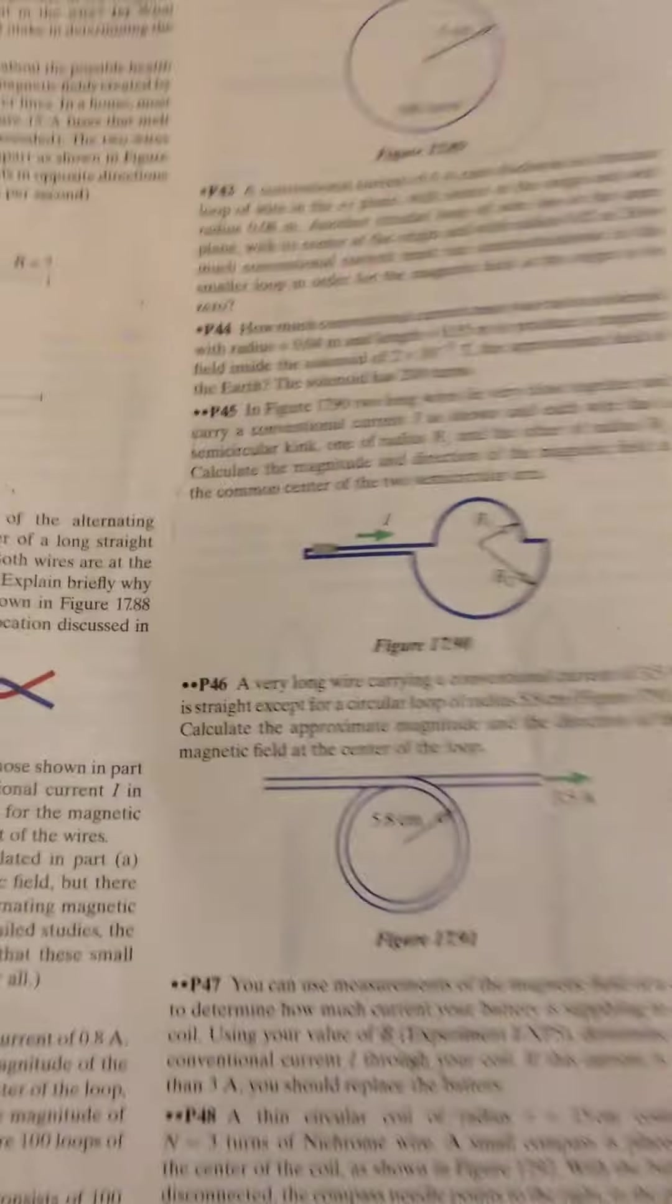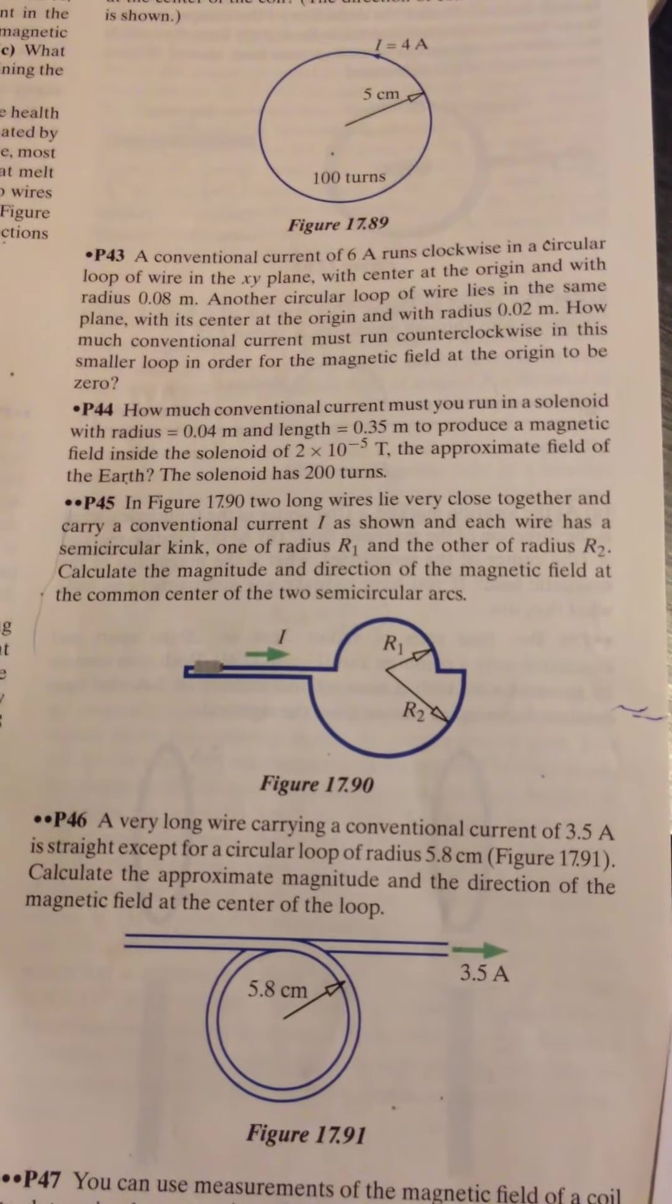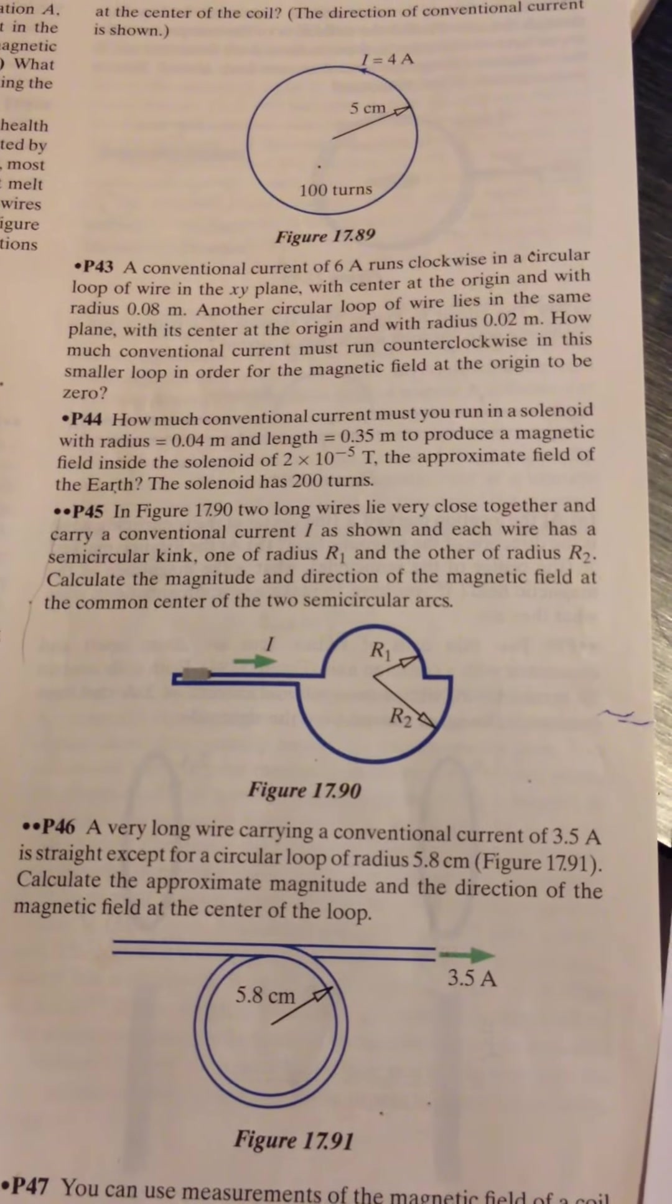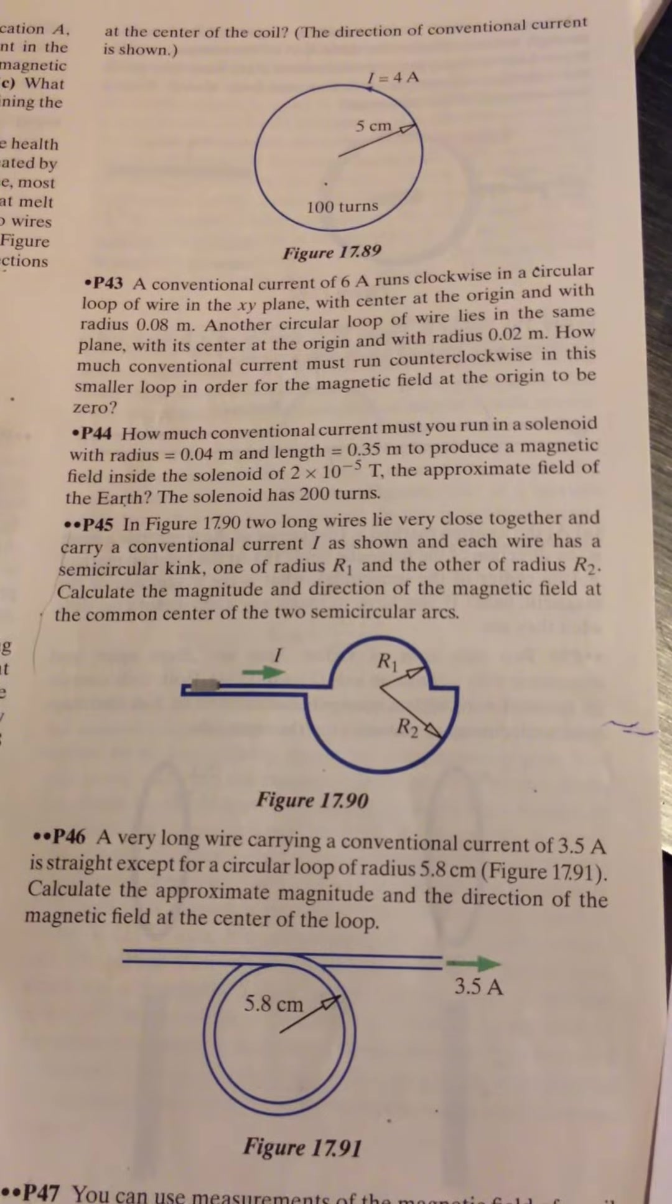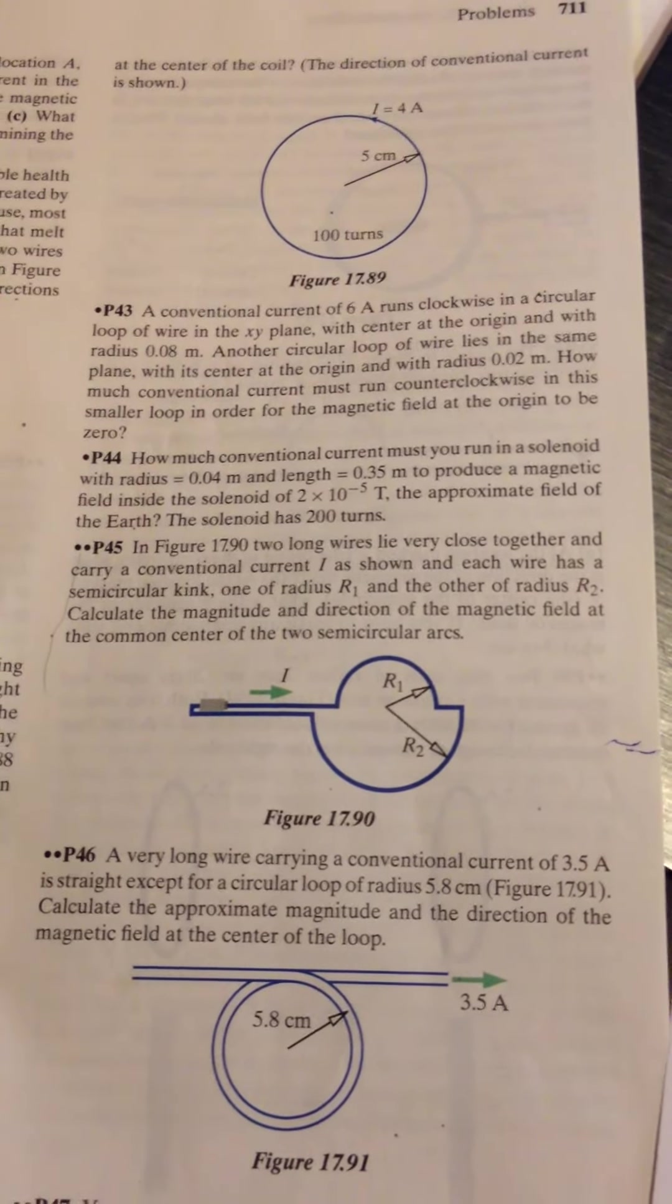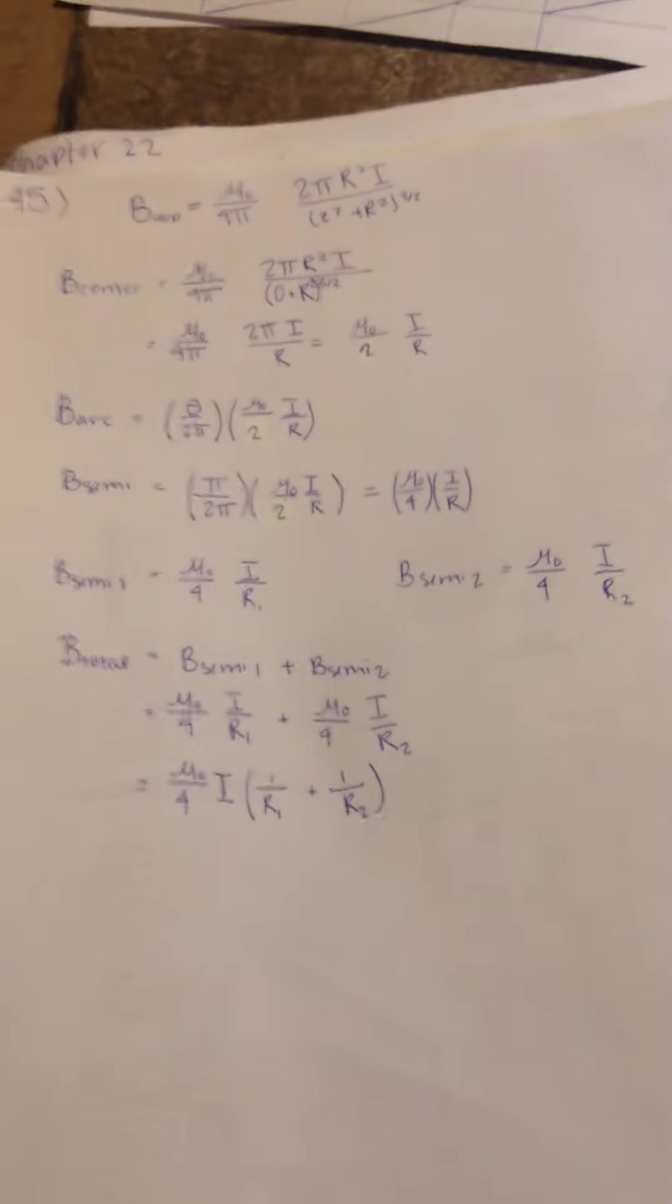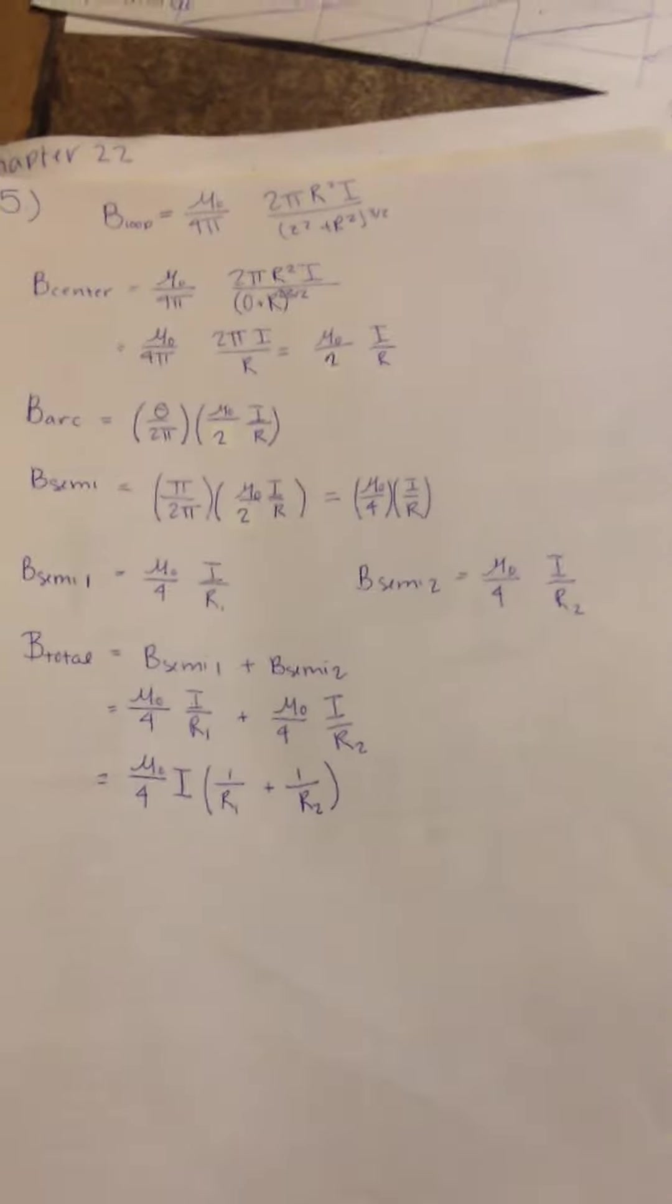45, it's given the image here. It's another pretty simple, straightforward problem. And it is asking us to calculate the magnetic field and the direction of the magnetic field at the common center of the two semicircles. So we're going to work on that one.